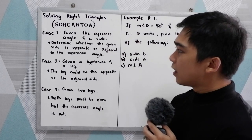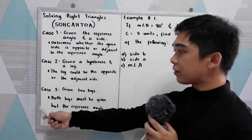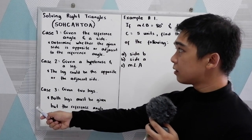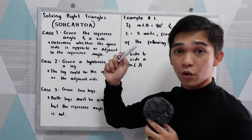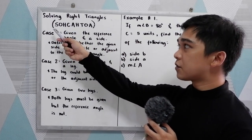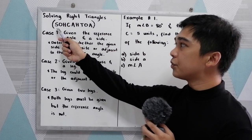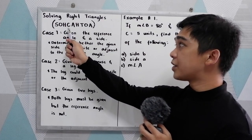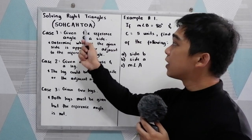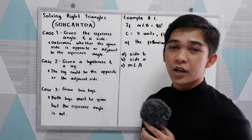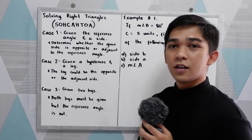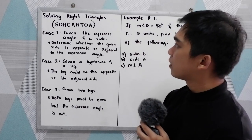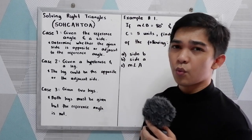Studying our cases one, two, and three — first, you need to master our SOHCAHTOA, because SOHCAHTOA stands for: sine is equal to opposite over hypotenuse, cosine is equal to adjacent over hypotenuse, and tangent is equal to opposite over adjacent. Please go to our playlist to watch the video tutorial about SOHCAHTOA.